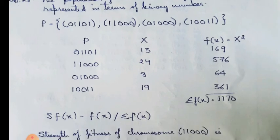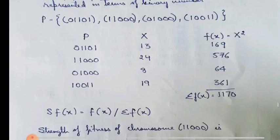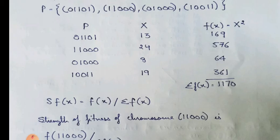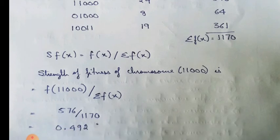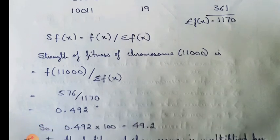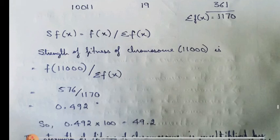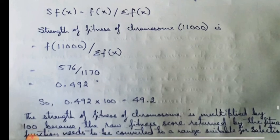Now, 01101 is 13 in decimal form and its square is 169. Similarly, we have written all the decimal numbers and all the squares. Now, S(FX) is equal to F(X) divided by Sigma F(X). We have calculated Sigma F(X) is equal to 1170. So, strength of fitness of chromosome 11000 is F(11000) divided by Sigma F(X). That is 576 divided by 1170. So it comes out as 0.492.